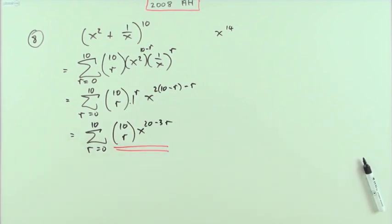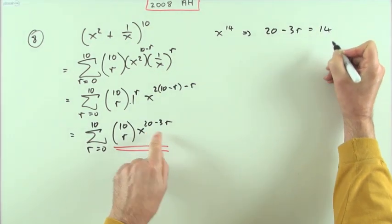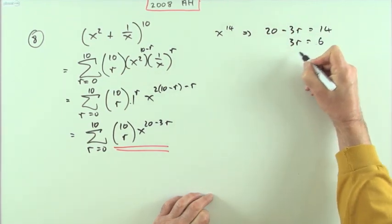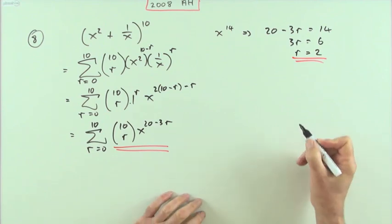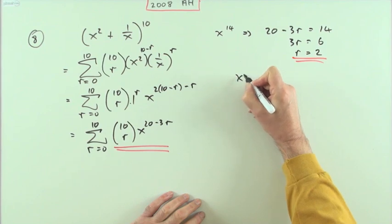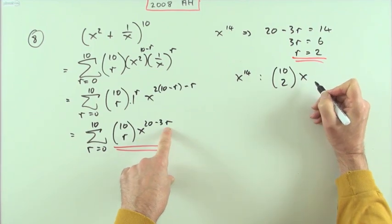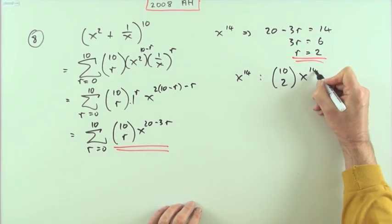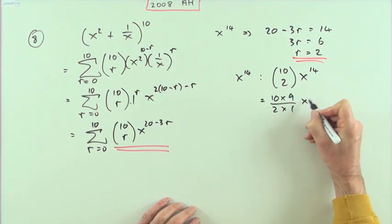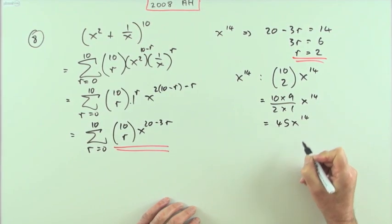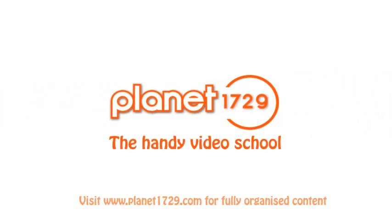Now if you want the term in x to the 14, that means 20 minus 3r should equal 14. So 3r should equal 6, and r should equal 2. So I want to evaluate that particular term when r is 2. The term in x to the 14 is going to be 10-choose-2 times x to the 14. Working that out: 10 times 9 over 2 times 1, times x to the 14 — that gives 45x to the 14.